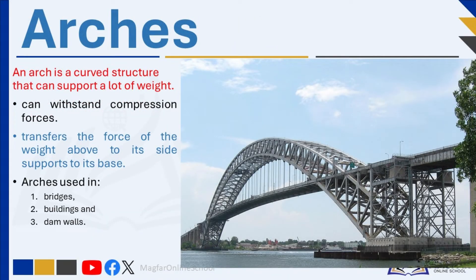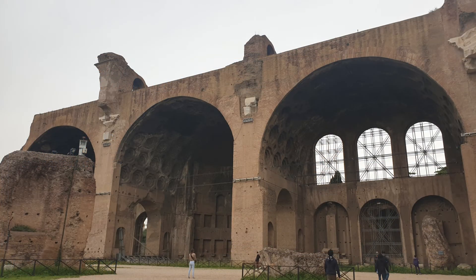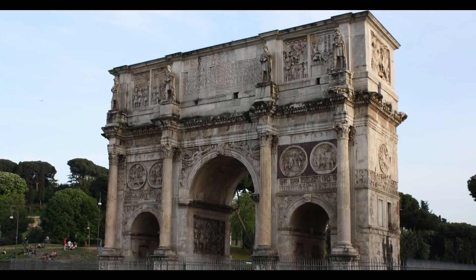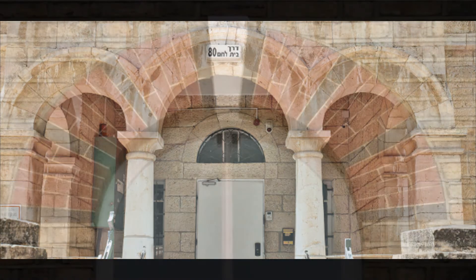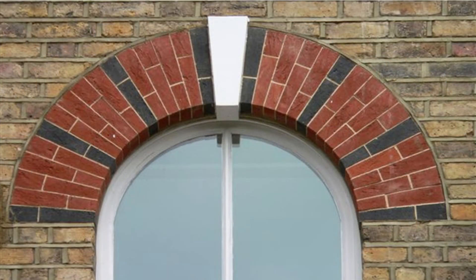An arch is a curved structure that can support a lot of weight. Arches can withstand compression forces. An arch supports a horizontal structure, and its shape helps to transfer the force of its weight and any weight pressing down on top of it, down its side supports to its base. Arched structures can span greater distances than beams. The arch spreads the force over a larger area. They can be made of stone, brick, concrete, steel or other materials. Arches are commonly seen in historical architecture and modern constructions, and can be used in bridges, buildings, and dam walls. In ancient times, the available building materials would break very easily under tension forces, so people commonly used arches in buildings to prevent this from happening.